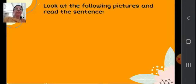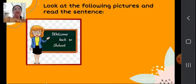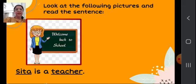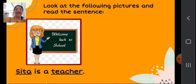Now I am showing you some pictures and there are related sentences, so you have to read them. Look at this picture. What can you see in this picture? A teacher. Sita is a teacher — like Neelam is a teacher. This teacher's name is Sita. And here you can see I have underlined Sita and teacher. I will let you know why I have underlined these.